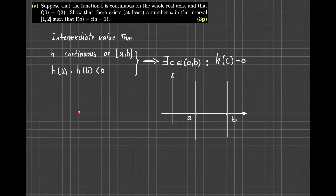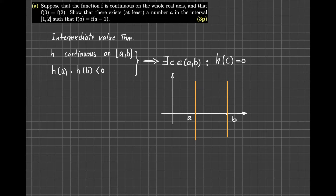I can start from a point and go continuously to another point. So I start somewhere here — say this is h of a — draw a continuous curve, and end up somewhere on the other vertical line. There is an extra condition: h of a times h of b is negative. This happens if and only if either the first is positive and the second is negative, or the first is negative and the second is positive.